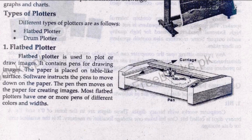The flatbed plotter contains pens for drawing images, as shown in the figure. The pens are placed and the paper is laid on the surface, and the pens move on the paper according to instructions. The paper is placed on a flat table-like plain surface. The software instructs the pen to move down on the paper and draw, and then the pen moves on the paper to create images.